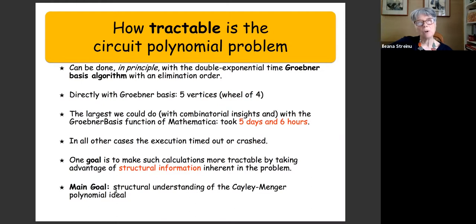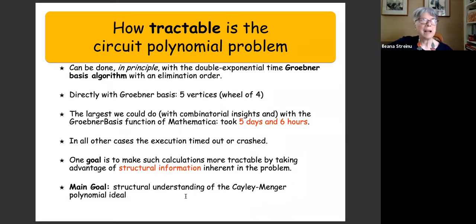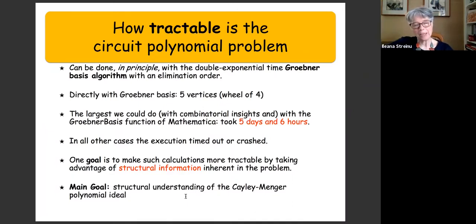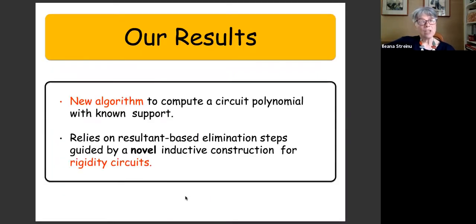Our goal is to make such calculations more tractable by taking advantage of structural information inherent in the problem. The main mathematical goal of this line of research is a structural understanding of the Cayley-Menger polynomial ideal. The paper relies on concepts from so many areas that the definitions cannot be swept under the rug. In my presentation, I will focus primarily on the combinatorial part. Our results: we have a new algorithm to compute circuit polynomials that is not based on Gröbner basis, but on resultants — elimination done with Sylvester resultants, guided by a novel inductive construction for circuit graphs.